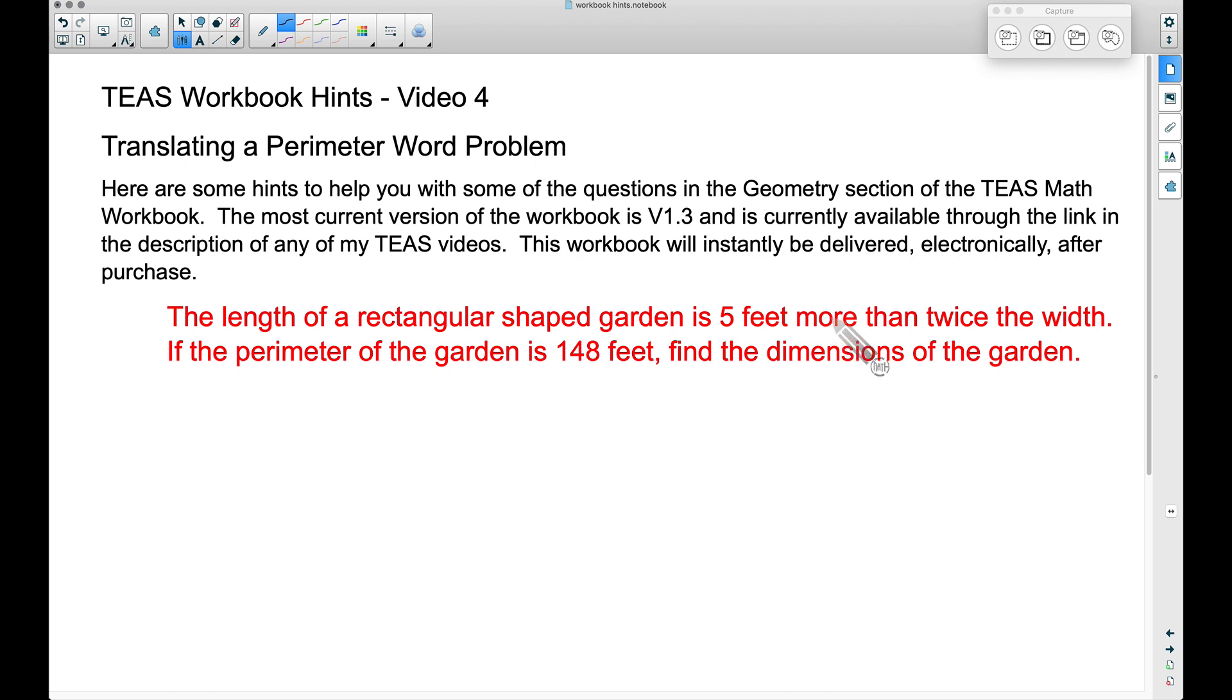The length of a rectangular shaped garden is 5 feet more than twice the width. If the perimeter of the garden is 148 feet, find the dimensions of the garden. Let's solve this algebraically.